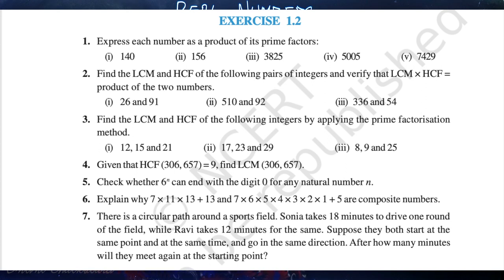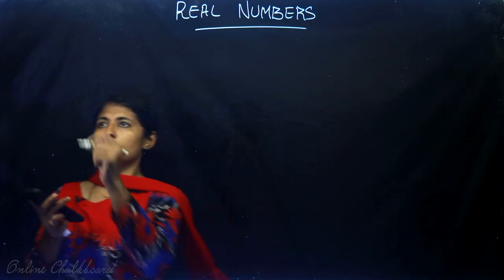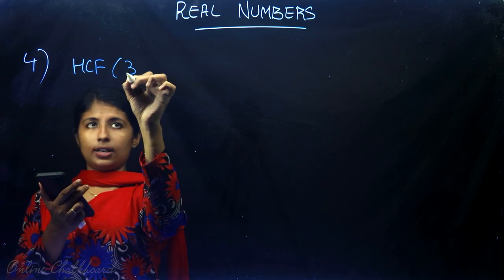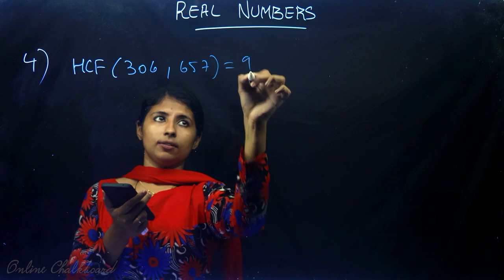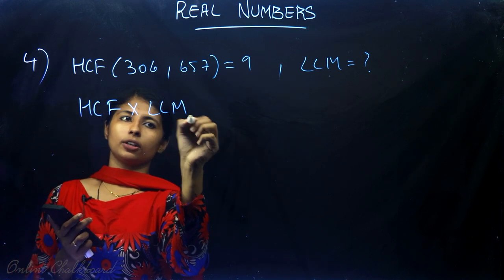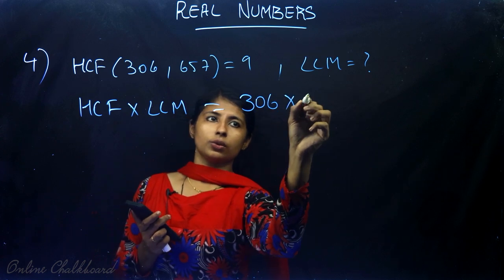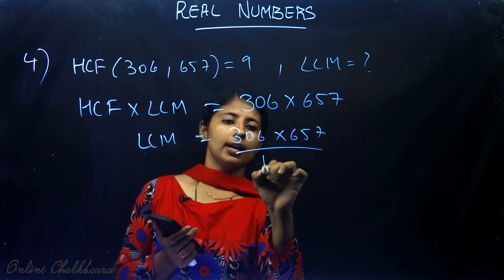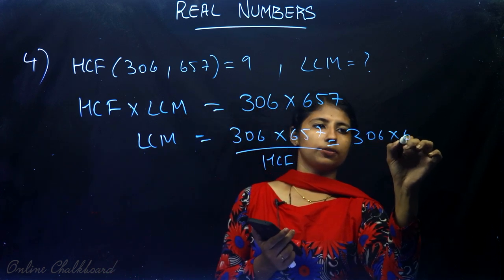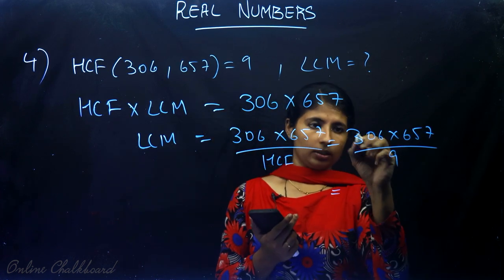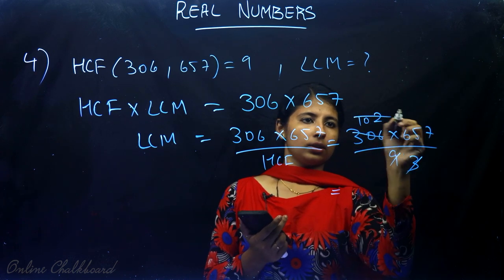Question number 4: Given that the HCF of 306 and 657 is 9, find the LCM of 306 and 657. We know that HCF × LCM = product of the two numbers. So LCM = (306 × 657) ÷ HCF = (306 × 657) ÷ 9. Calculate this to find the value of LCM.